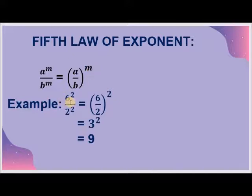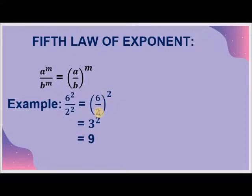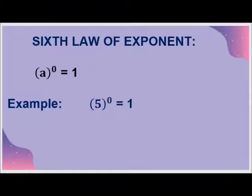For example, if we have 6 raised to the power 2 divided by 2 raised to the power 2, we divide 6 by 2 to the whole power 2. Then 6 upon 2 is 3, written as 3 raised to the power 2. 3 times 3 is 9, so this becomes the answer.